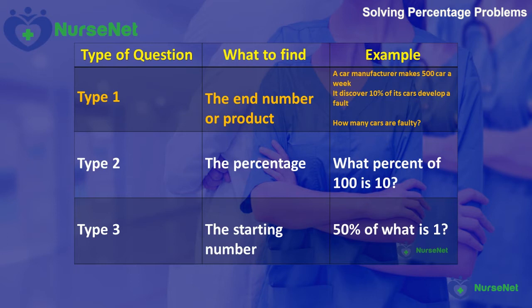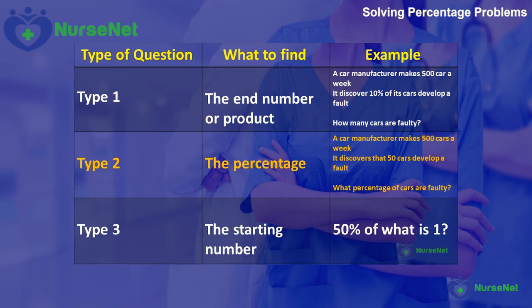A Type 2 question: a car manufacturer makes 500 cars a week and discovers that 50 cars develop a fault. What percentage of cars are faulty? Here we're looking for the percentage of faulty cars, which is 10%.